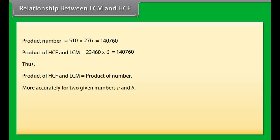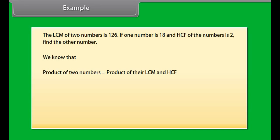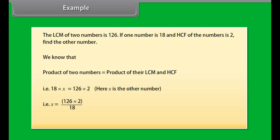For two given numbers a and b, HCF(a,b) × LCM(a,b) = a × b. Example: The LCM of two numbers is 126. If one number is 18 and HCF of the numbers is 2, find the other number. We know the product of two numbers equals the product of LCM and HCF: 18 × x = 126 × 2, so x = 252 / 18 = 14.